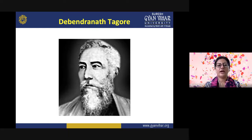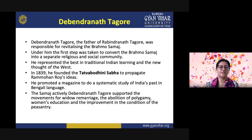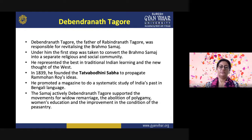Next we will talk about Devendranath Tagore, who was the father of Rabindranath Tagore and a great reformer. He was responsible for revitalizing the Brahma Samaj established by Raja Ram Mohan Roy. Under him, the first step was taken to convert the Brahma Samaj into a separate religious and social community. He represented the best in traditional Indian learning and new Western thought. In 1839, he founded the Tatva Bodhini Sabha to propagate Ram Mohan Roy's ideas, and promoted a magazine for a systematic study of India's past in the Bengali language. Through the Samaj, Devendranath Tagore supported movements for widow remarriage, abolition of polygamy, women's education, and improvement in the condition of peasants.